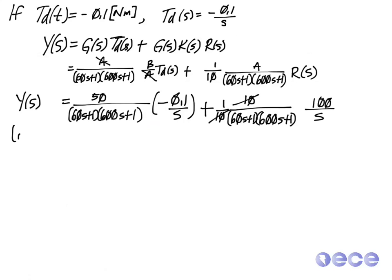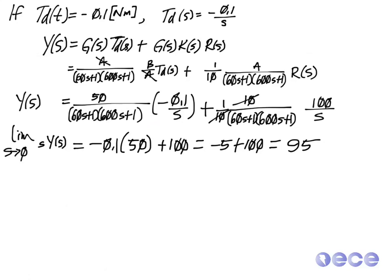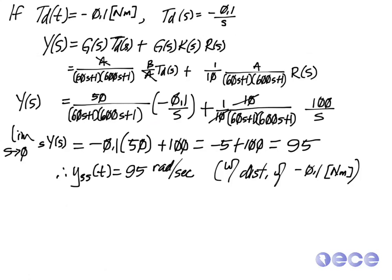So if I evaluate this now for Y of S and take the limit of S Y of S for these values TD of S and R of S, I find out that the limit as S approaches 0 is 95. So that tells me that the steady state value for Y is 95 radians per second with a disturbance of minus 0.1 newton meters.